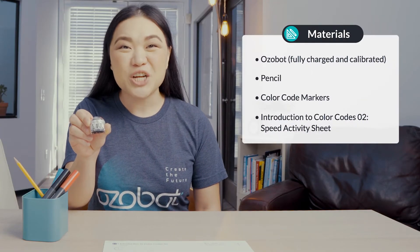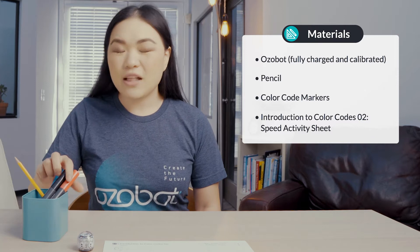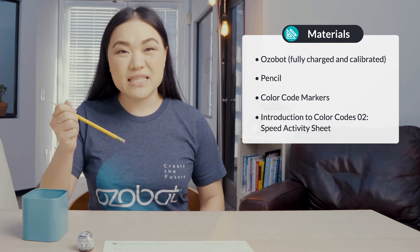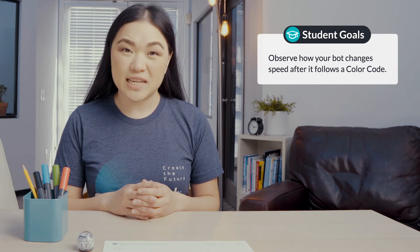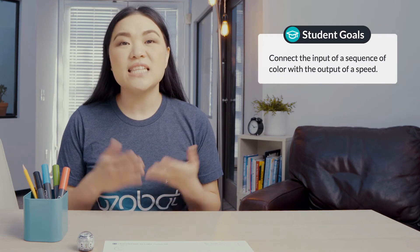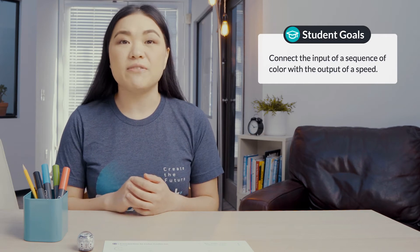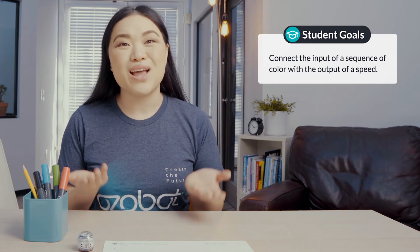For today's lesson you'll need an Ozobot fully charged and calibrated, color code markers, a pencil, and your introduction to color codes to speed activity sheet. In today's lesson you will draw color codes to program your bot to move at different speeds, observe how your bot changes speed after it follows a color code, and connect the input of a sequence of color with the output of speed.